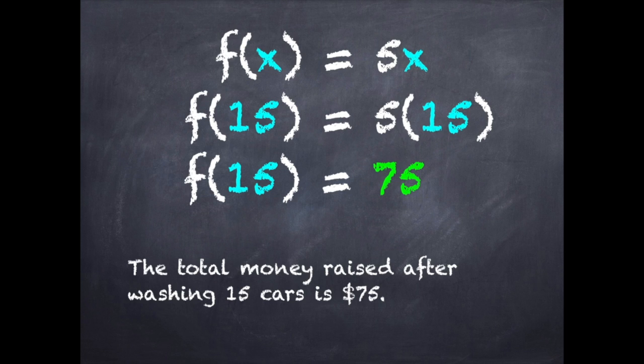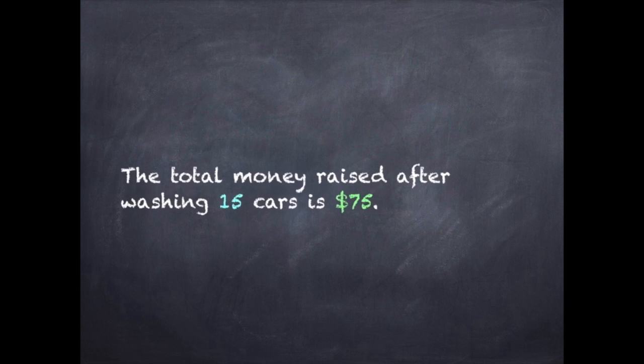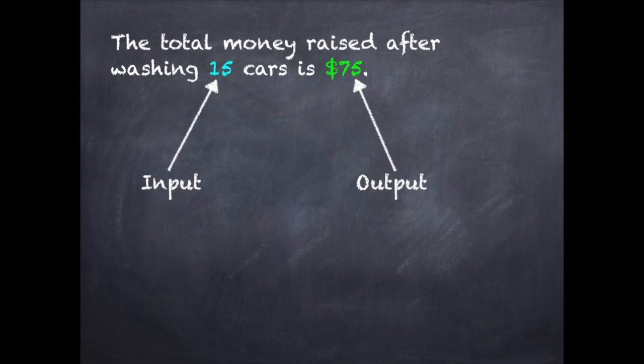So using function notation, you can see where at 15 cars, the amount is $75. Input is 15, $75 is your output.